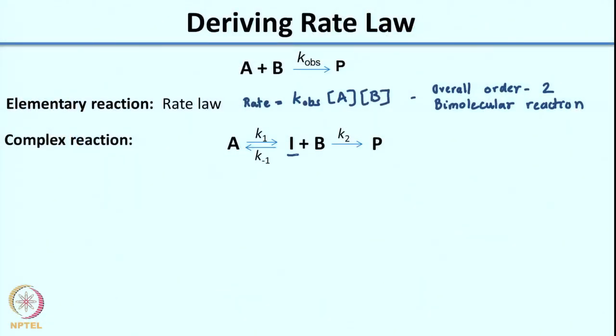Now what do we do if the reaction is more complicated? When we mix A and B to get product P, the actual mechanism might involve A going to an intermediate I first, and then I reacts with B to give P. Each of these processes has its own rate constants: K1 for the forward reaction to I, K-1 for the reverse reaction. So how do we derive the rate law for such complex reactions? That is what we will do in this lecture.